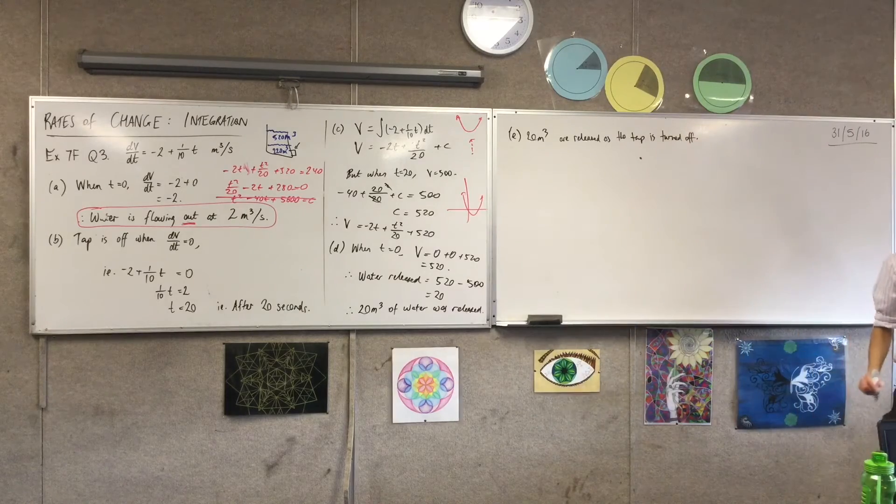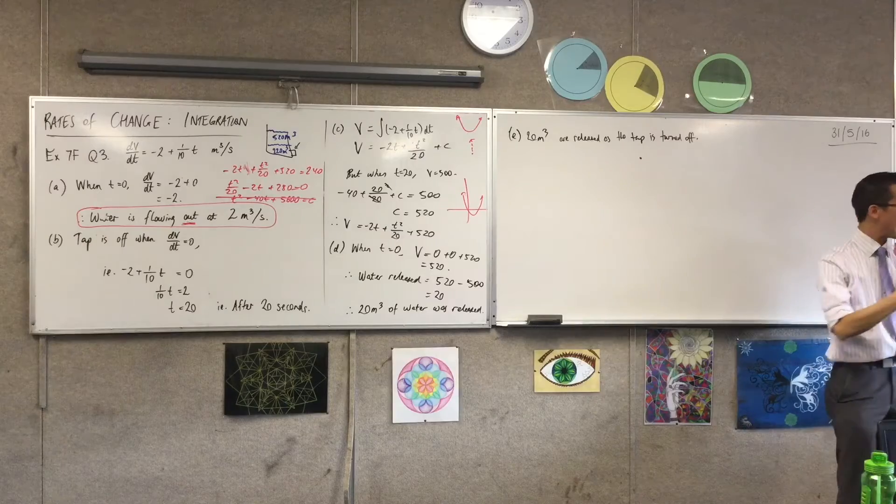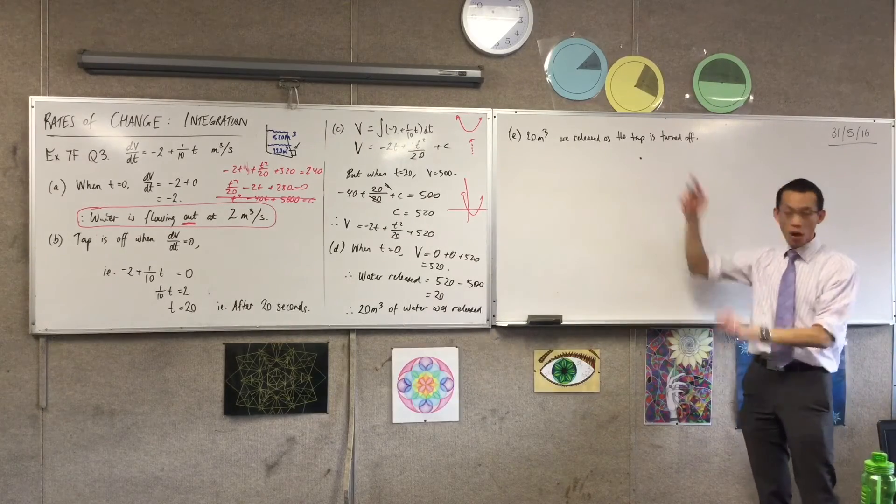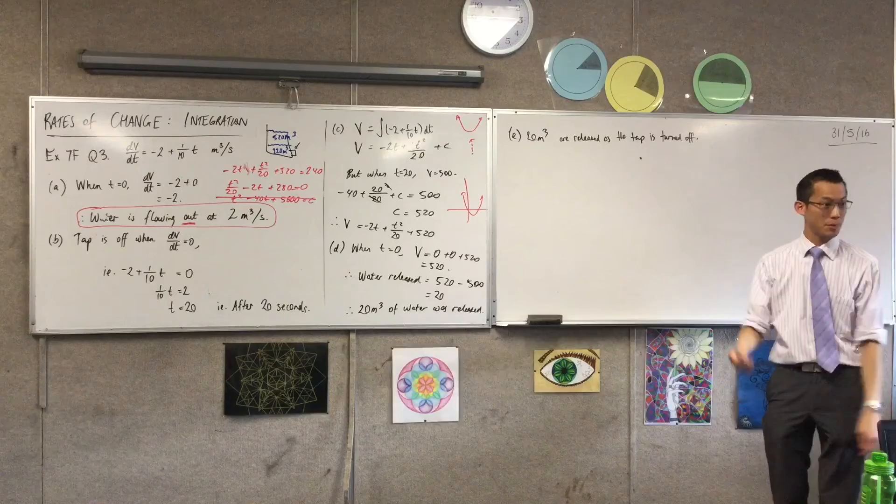Okay? So as a consequence, I want 280 cubic meters to be released not when the tap is being turned off, like when the tap is fully on, right?